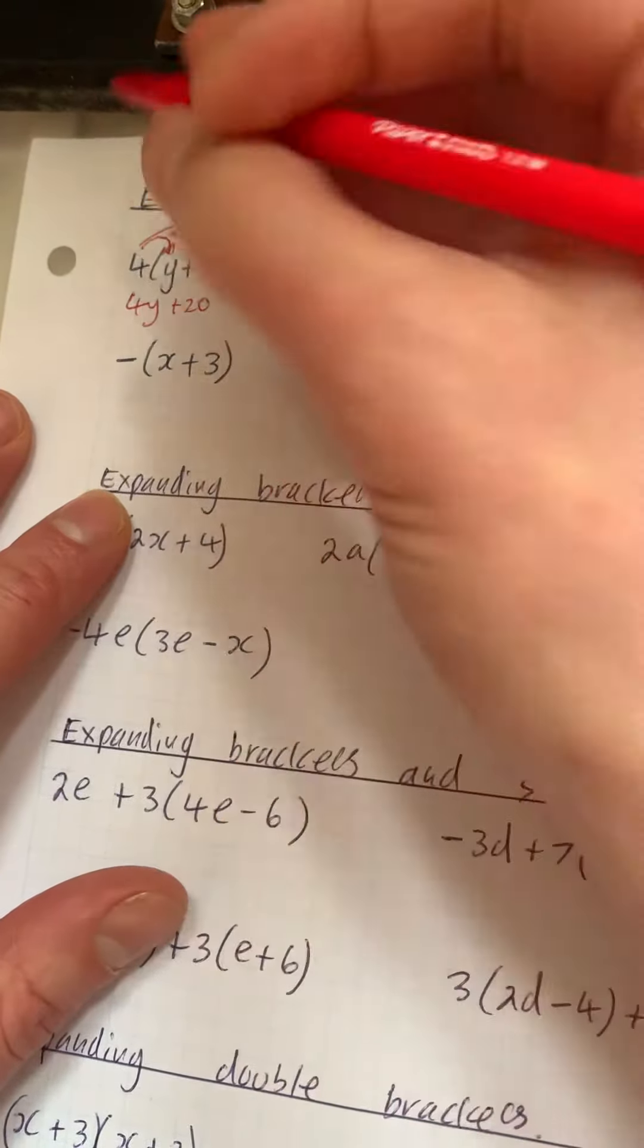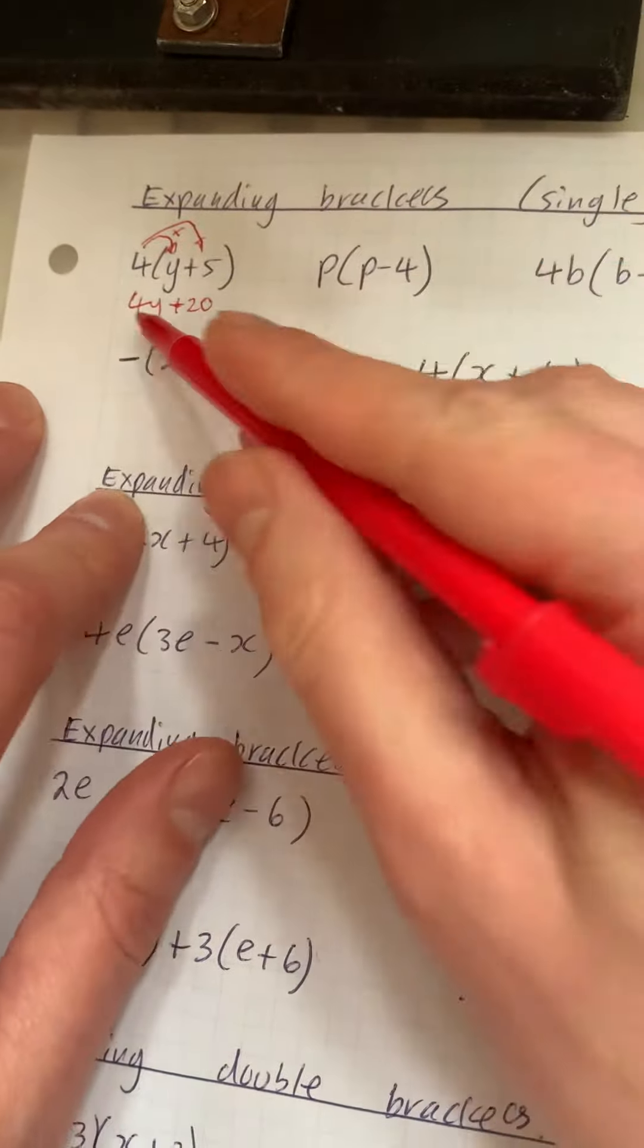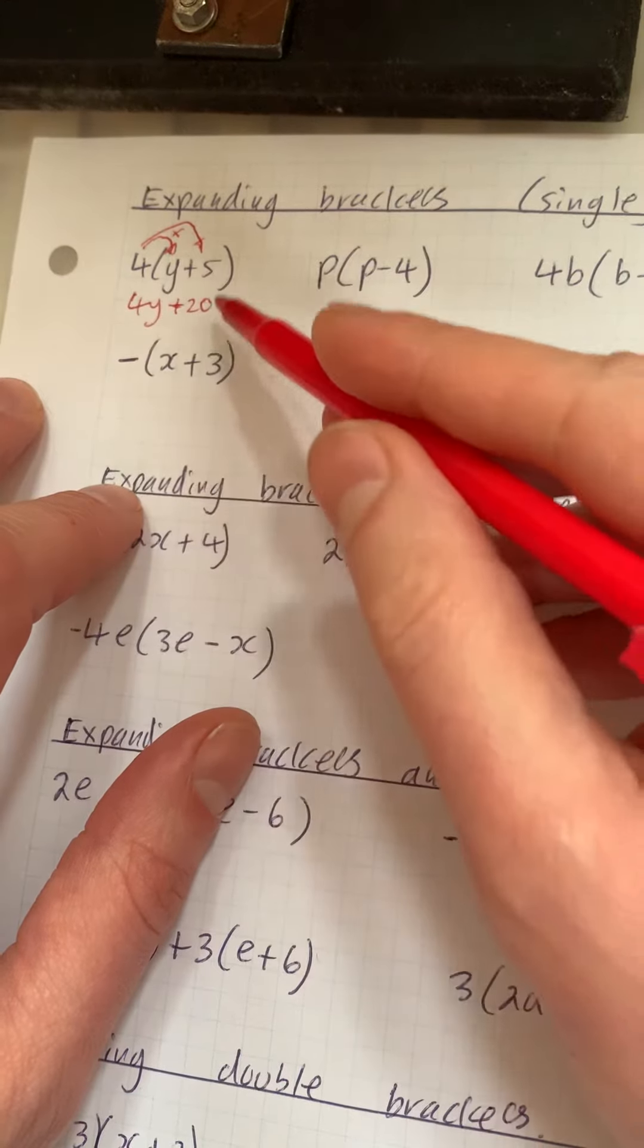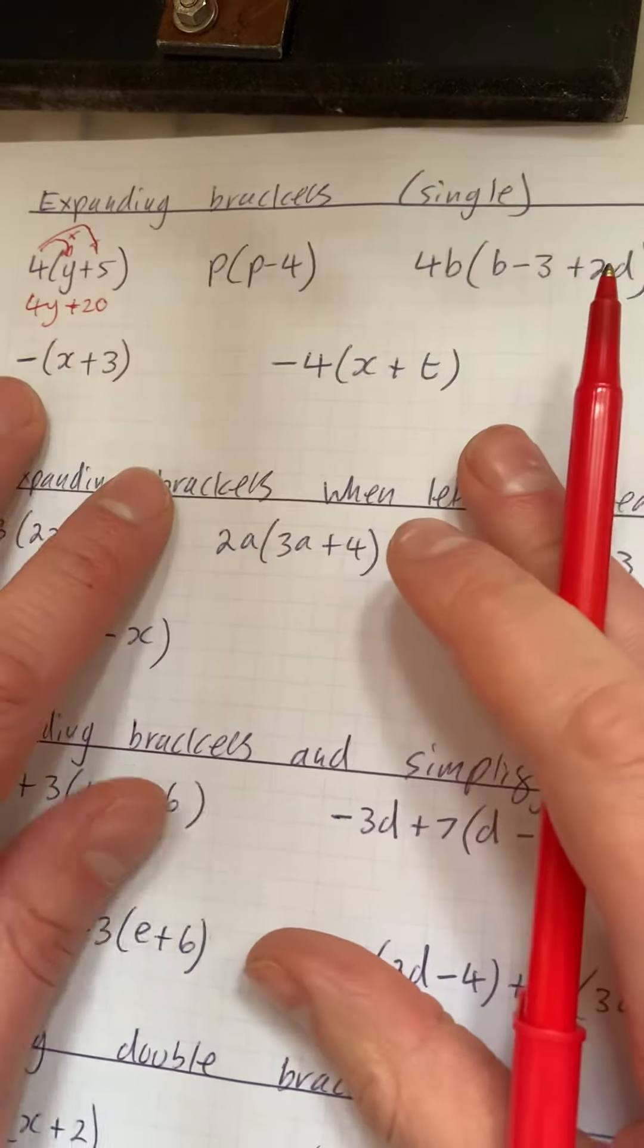And we can't add 4y and 20 because they're different terms. We think of this as yogurts and this is money, so we have to leave it how it is.